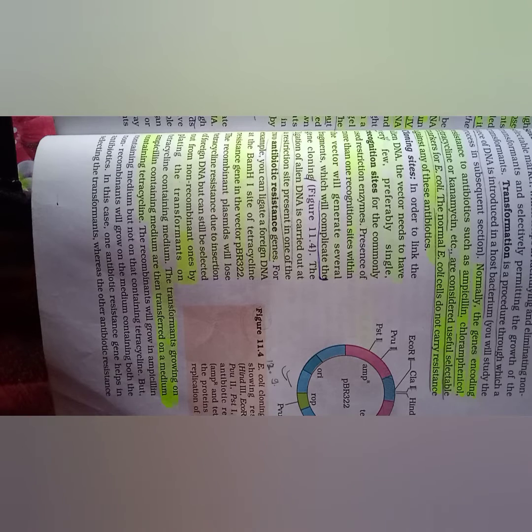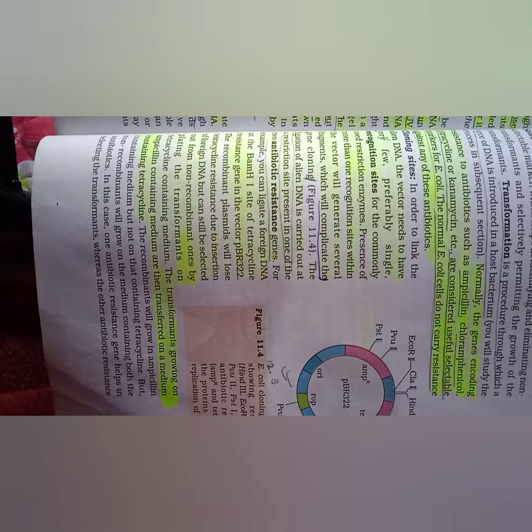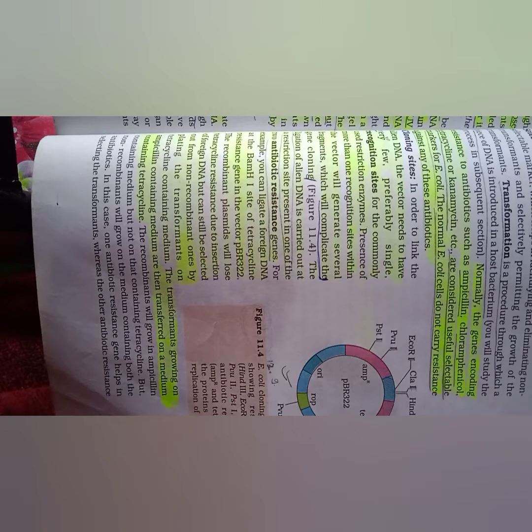The recombinant plasmid will lose tetracycline resistance due to insertion of foreign DNA, but can still be selected from non-recombinant ones by plating the transformants on tetracycline-containing medium. The transformants grow on ampicillin-containing medium and are then transferred onto medium containing tetracycline.